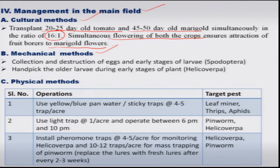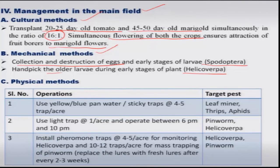Mechanical methods include collection and destruction of egg masses and congregated larvae of Spodoptera, which can be easily located, and collection and destruction of grown larvae of Helicoverpa in early plant stages. Physical methods include installation of sticky or color traps, light traps, and pheromone traps.